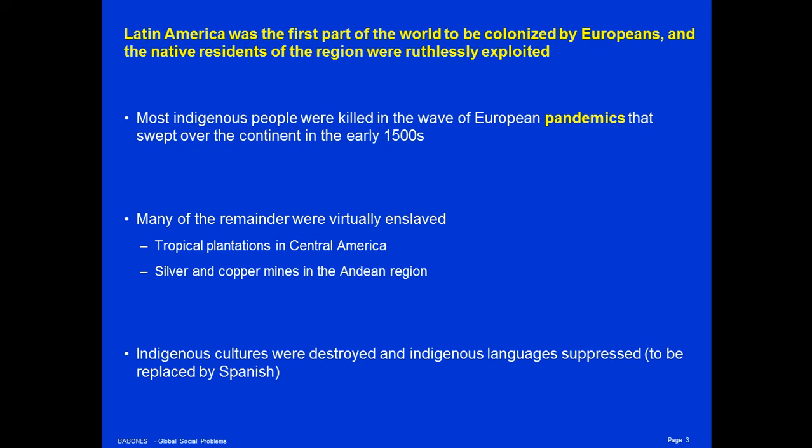Latin America was the first part of the world to be colonized by Europeans, and the natives of the region were ruthlessly exploited. We have to remember that most of the indigenous people of Latin America were simply killed in the wave of European pandemics, like smallpox and influenza, that swept over the continent in the early 1500s. The Spanish conquerors didn't help anything — they were extremely ruthless in exploiting and killing the native populations, but most of the killing was done by the wave of diseases that spread in advance of the conquistadores.